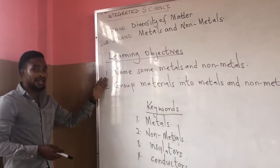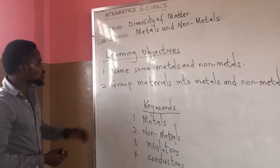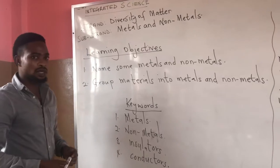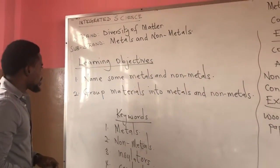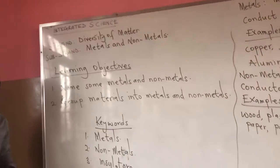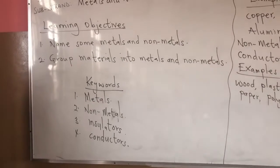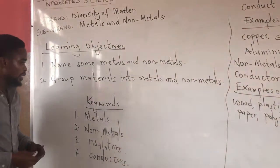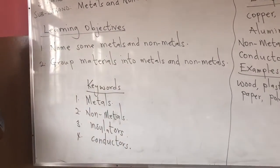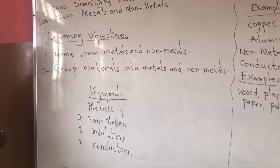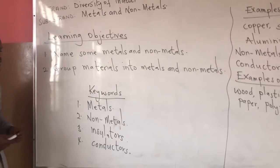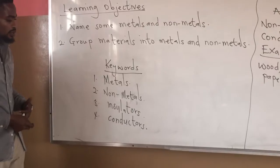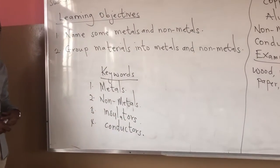By the end of the lesson, we should be able to name some metals and non-metals, and also group materials into metals and non-metals. Now let us look at the keywords of the day. We have metals, non-metals, insulators, and conductors.